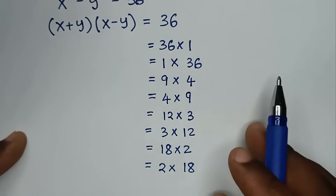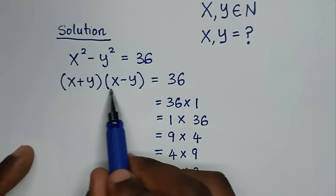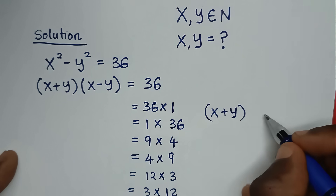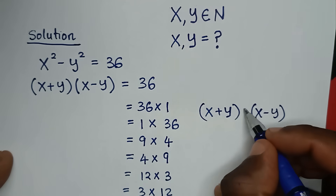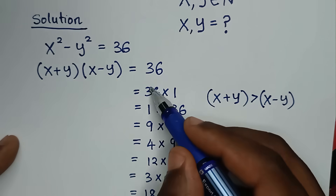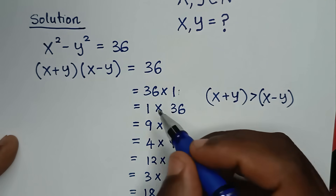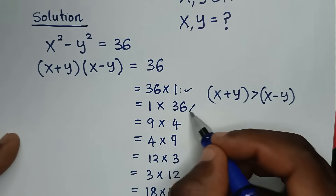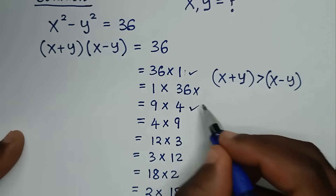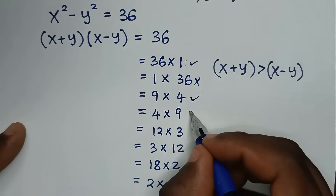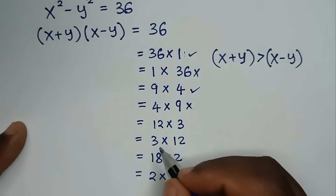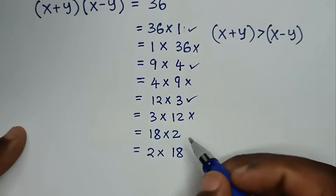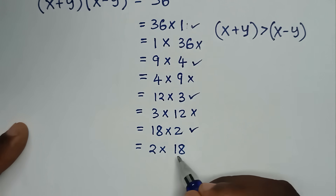From these 8 choices, comparing x plus y with x minus y — since x plus y is greater than x minus y — the first number should be greater than the second number. So 36 greater than 1 is okay; 1 less than 36 is not possible. 9 greater than 4 is okay; 4 less than 9 is not possible. 12 greater than 3 is okay; 3 less than 12 is not possible. 18 greater than 2 is okay; 2 less than 18 is not possible.